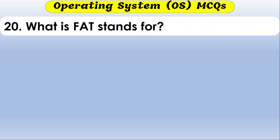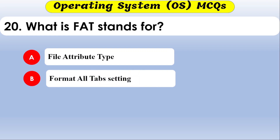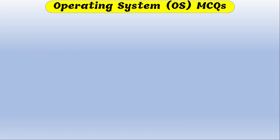What is FAT? The options are file attribute table, file allocation table, and format all type. The correct option is file allocation table — FAT stands for File Allocation Table.